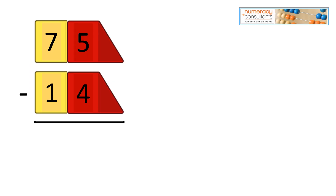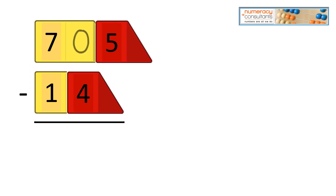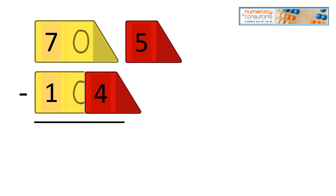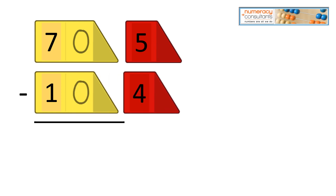75 minus 14. Let's go ahead and break off the ones again. We can do 5 minus 4, and we can do 70 minus 10. 70 minus 10 is 60, and 5 minus 4 equals 1. So our answer is 61.